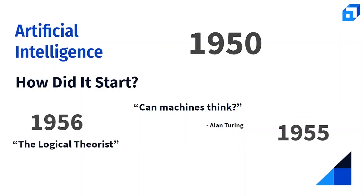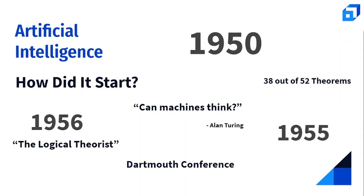The term 'artificial intelligence' was first coined in 1955 by John McCarthy from Dartmouth College, Nathaniel Rochester from IBM, Marvin Minsky from Harvard University, and Claude Shannon from Bell Telephone Laboratory. The first AI program, the Logical Theorist, was presented by Alan Newell, Herbert Simon, and Cliff Shaw at the Dartmouth conference in 1956.